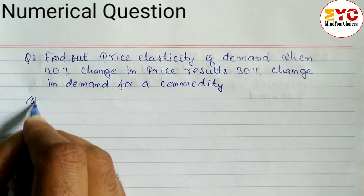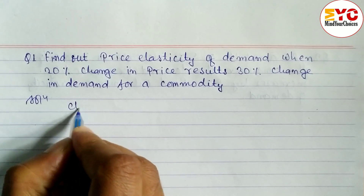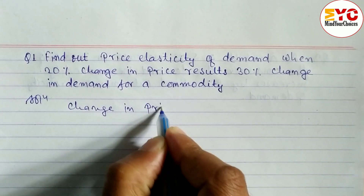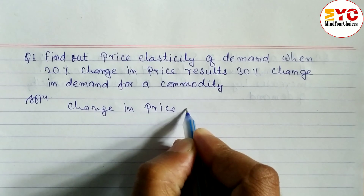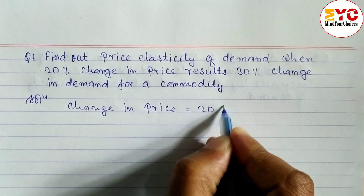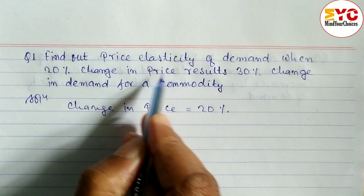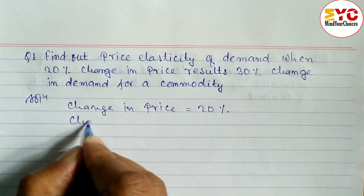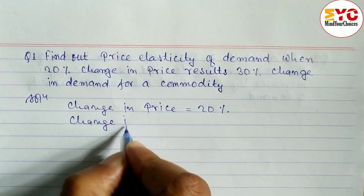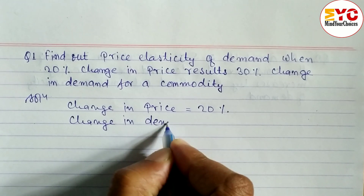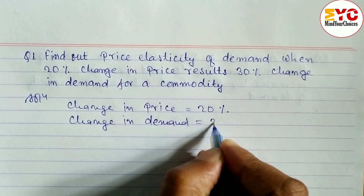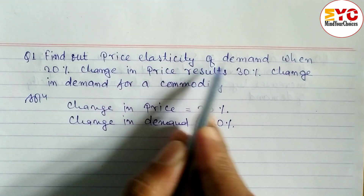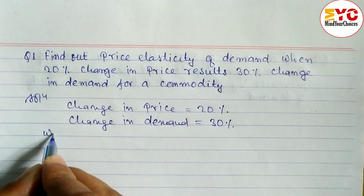Let's take a start. Here, percent change in price is equal to 20%, and percent change in demand is equal to 30%. We have to find out the price elasticity of demand, so we have to use the formula.